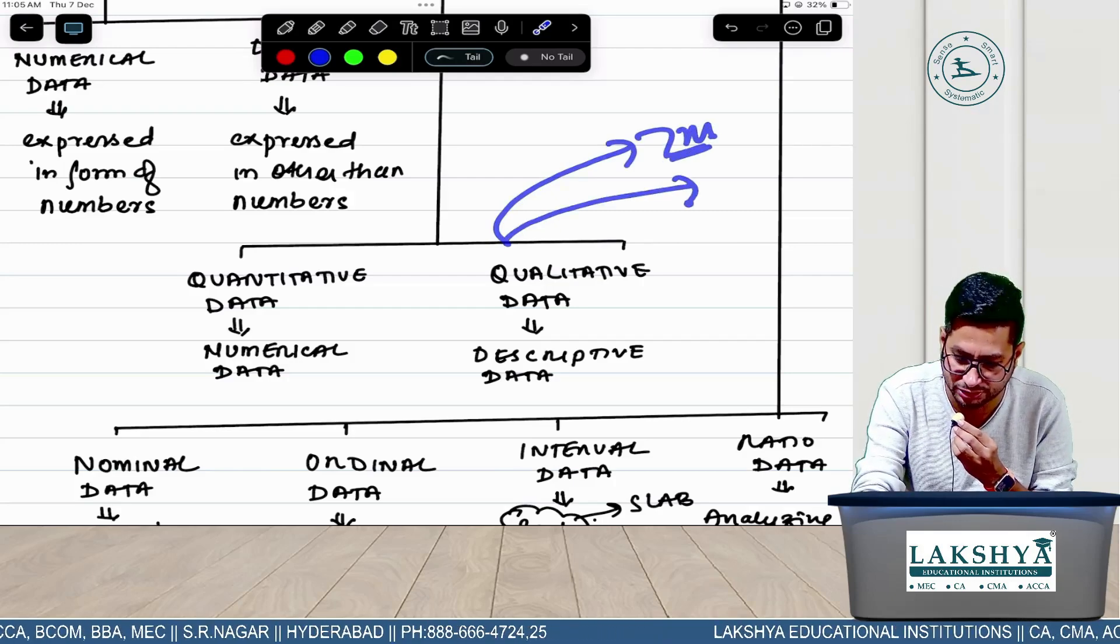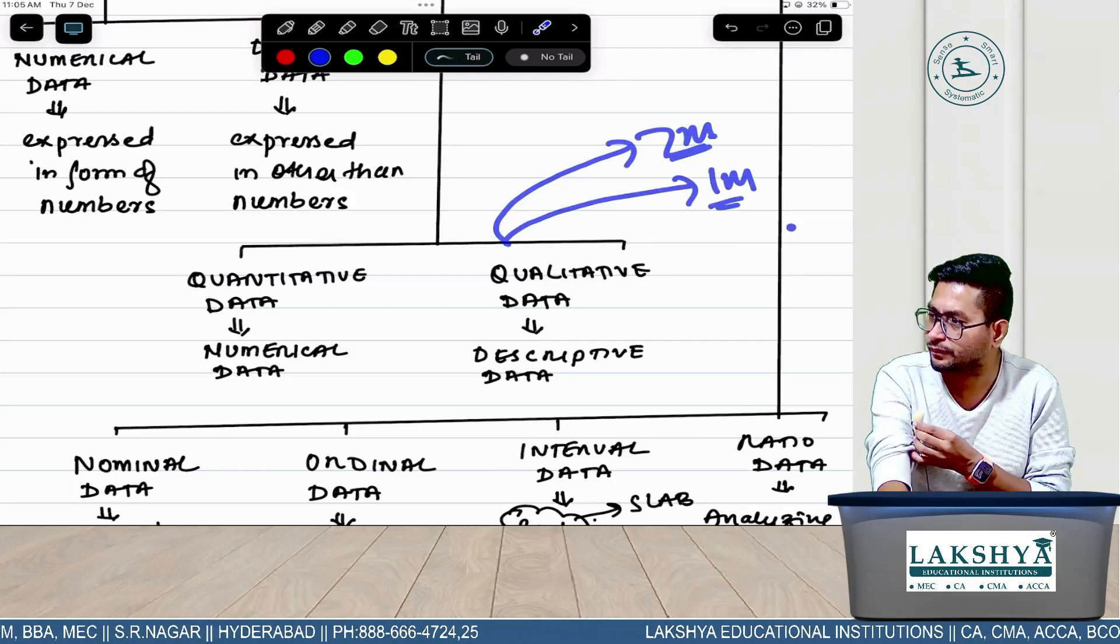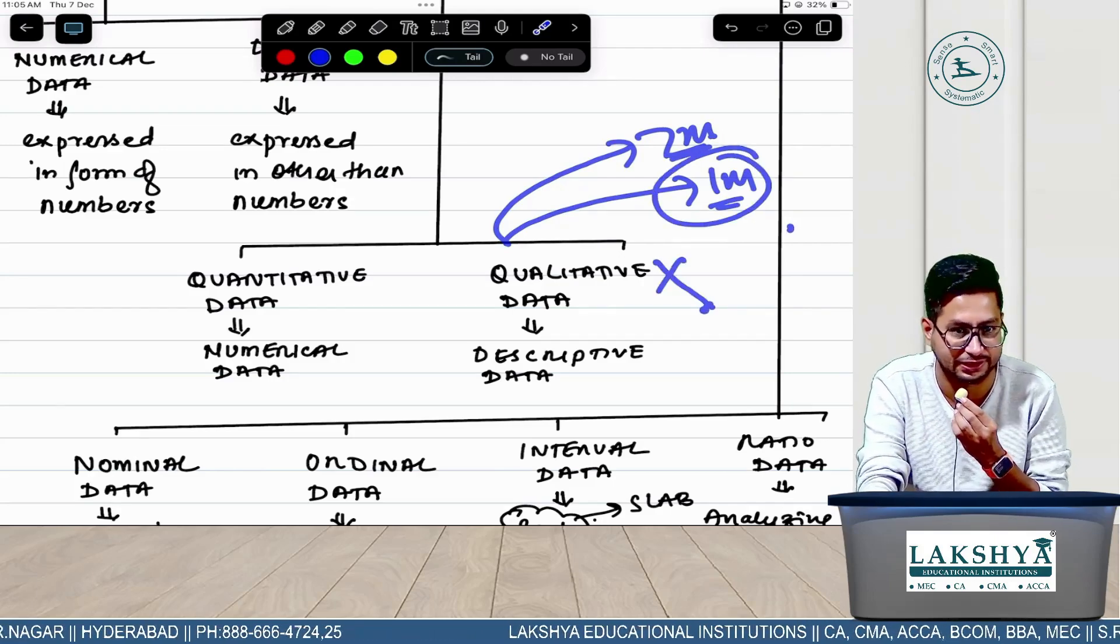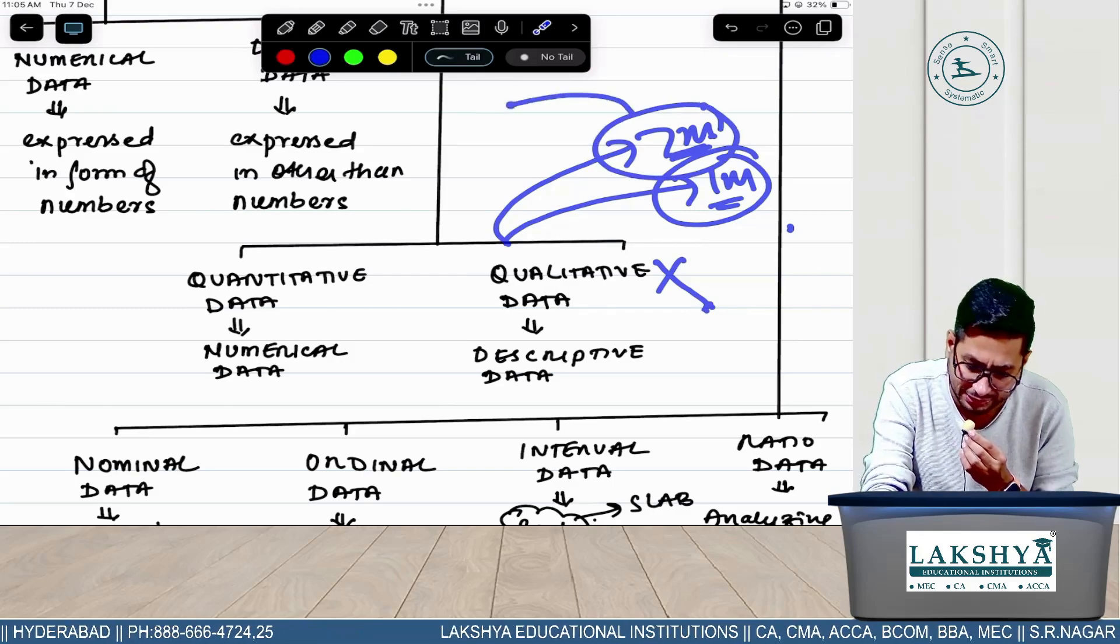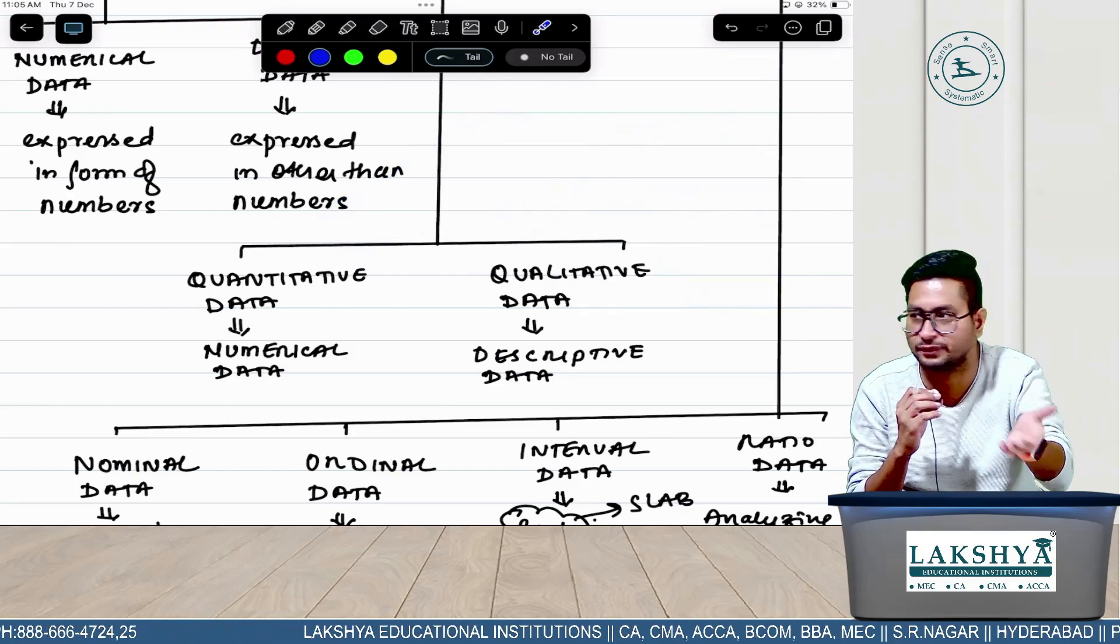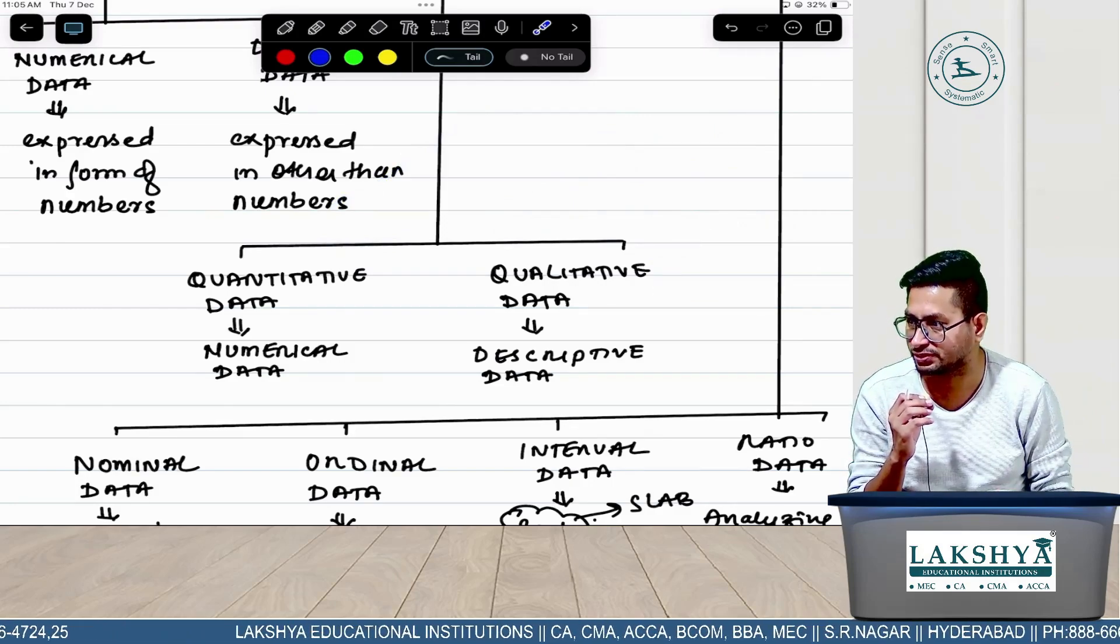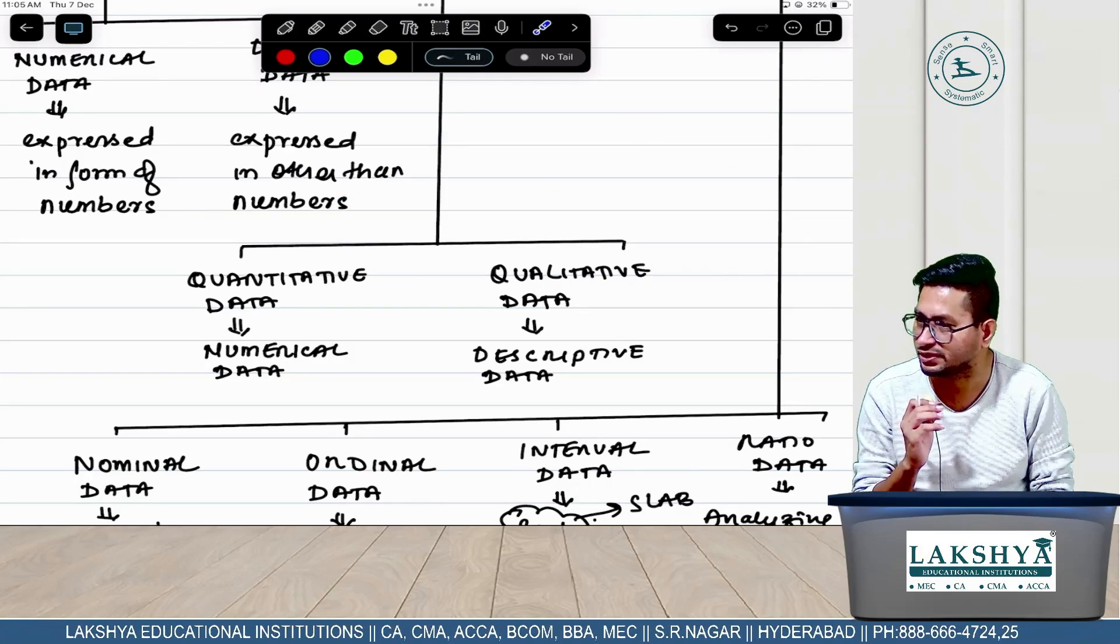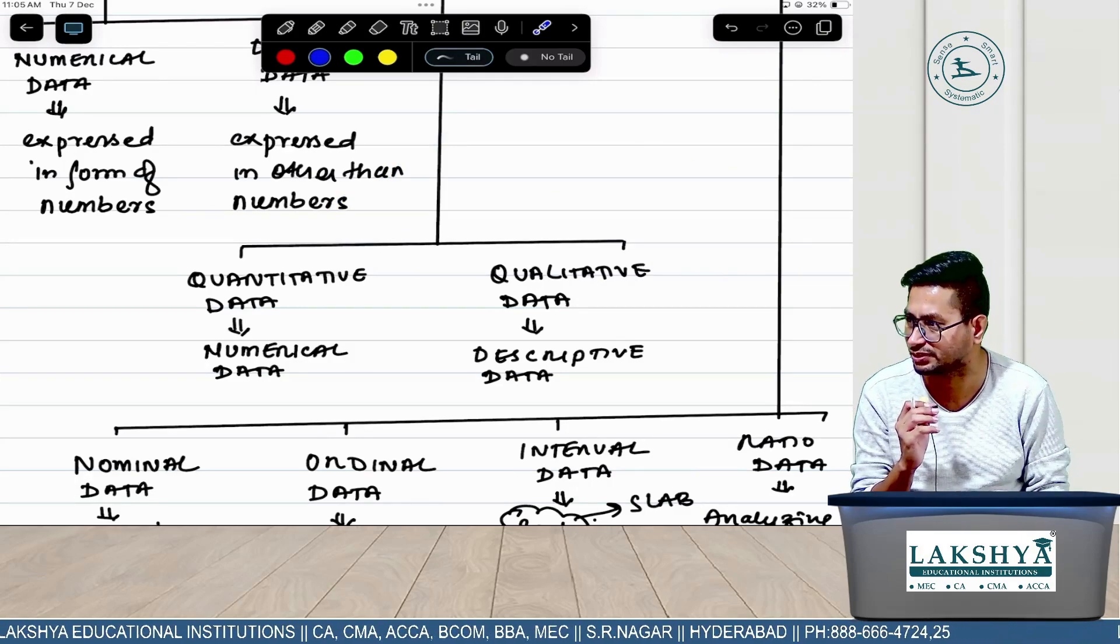So a question like this they can give for seven marks, which they have given, or the same question for one mark also. For one mark no tension - write four lines and you'll get marks. For seven marks write the same thing. That's the institute's problem that they gave this question for seven marks. Write whatever is in my material and come - that's more than enough. Seven marks they'll easily give six and a half.